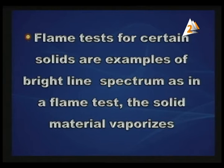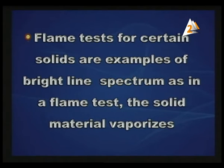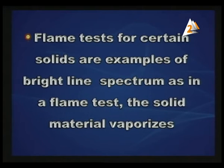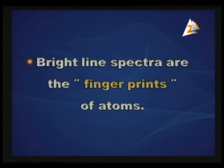Flame tests performed in chemistry for certain solids are examples of bright line spectrum. In a flame test, the solid material vaporizes, changing into a vapor. Bright line spectra are the fingerprints of the atoms — they are characteristics of the atoms emitting them.